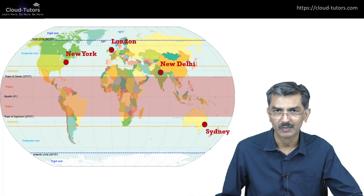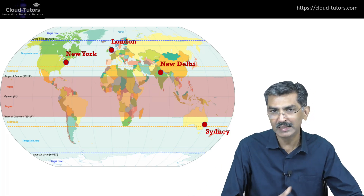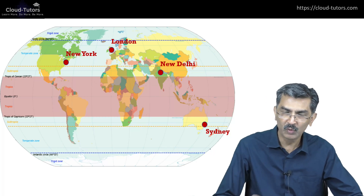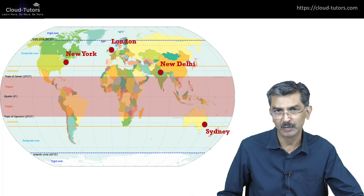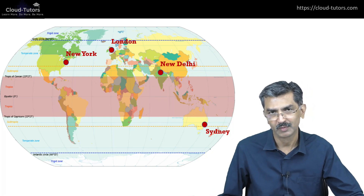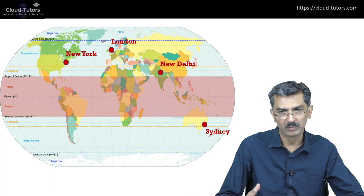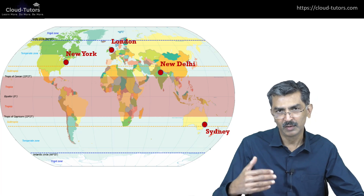So what is the answer to our question? For the cities we were considering — New York, London, New Delhi, or Sydney — when is the Sun directly overhead? It is never directly overhead at any point in the year. That is the significance of the Tropic of Cancer and Tropic of Capricorn: it is only between these two latitudes that the Sun can be directly overhead at least one day of the year. If you are north of the Tropic of Cancer or south of the Tropic of Capricorn, the Sun is never directly overhead. I learned about these latitudes in middle school but never really understood their significance — it's all about the apparent movement of the Sun in the sky as the Earth goes around the Sun.